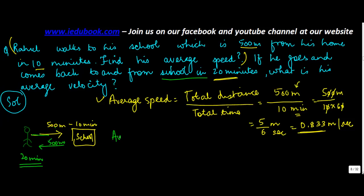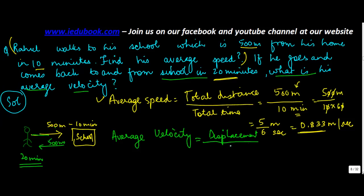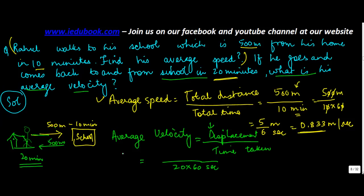Now we need to find the average velocity. Average velocity is displacement upon time taken. The time taken is 20 minutes, which is 20 into 60 seconds. But what is the displacement? He started from his house and came back to his house only, so the displacement is actually 0. Which means the average velocity is also 0 meters per second, because the displacement in this case was 0.